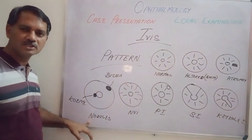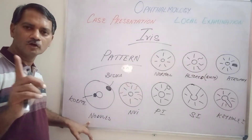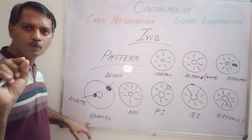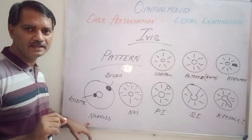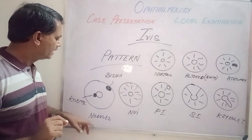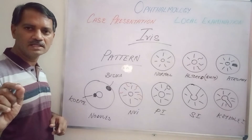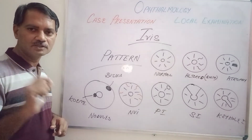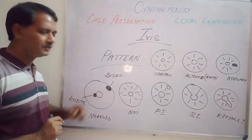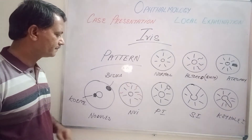The next example is nodules in the iris. In chronic iridocyclitis, you can see small swellings on the surface of the iris. If they are close to the pupillary border, they are called Koeppe nodules. If they are away from the pupillary border, they are called Busacca nodules.